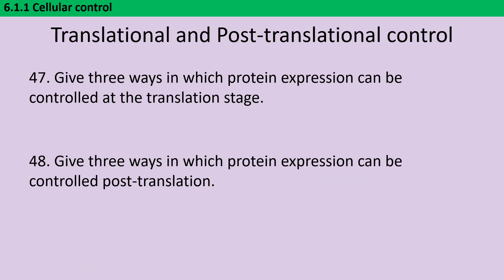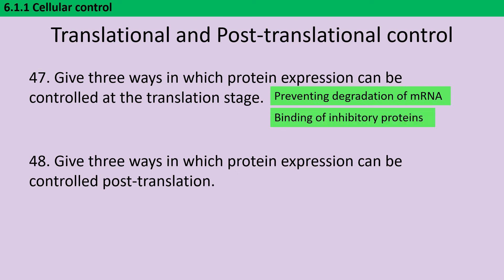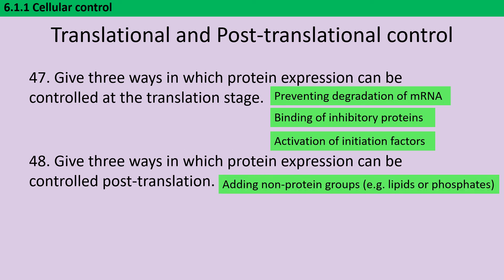Adding a poly-A tail and 5-prime cap to prevent degradation of mRNA is one way to change protein expression at the translation stage, but we can also have binding of inhibitory proteins and we can activate initiation factors. Post-translation, it's also possible to alter the activity of a protein by adding non-protein groups — such as lipids, phosphates or carbohydrate chains — by modifying amino acids, which may lead to different changes in bonding and therefore the shape of the protein, and also by modification by cyclic AMP.